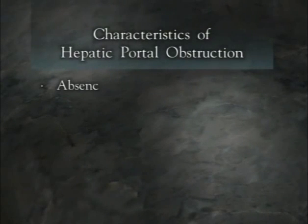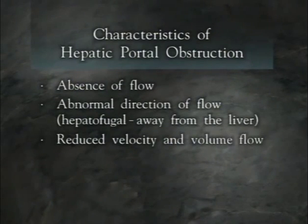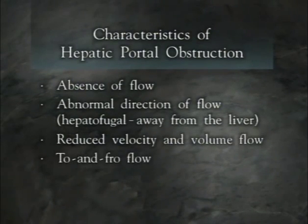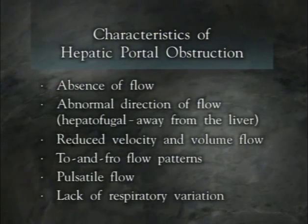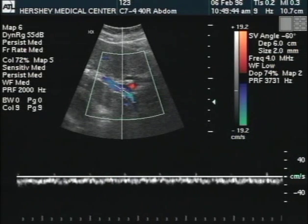Abnormal hemodynamics encountered in the extra- and intrahepatic portal veins with obstruction to inflow to the liver include: absence of flow, abnormal direction of flow (hepatofugal, or away from the liver), reduced velocity and volume flow, to-and-fro flow patterns, pulsatile flow, and lack of respiratory variation. Note in this example that the portal venous flow is directed away from the liver and the Doppler waveform has lost phasicity.